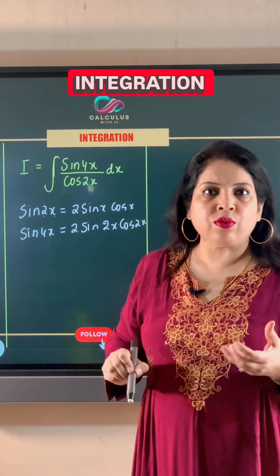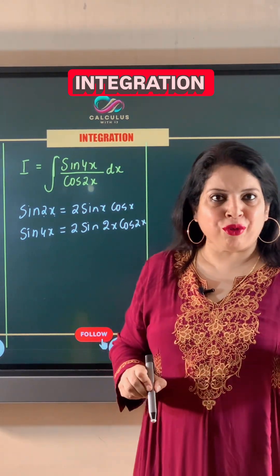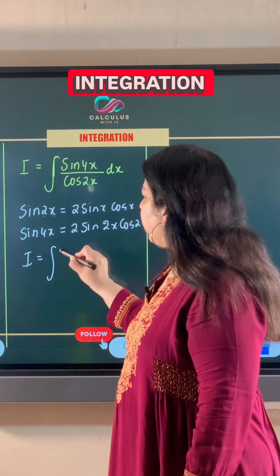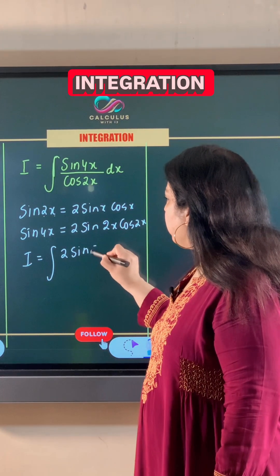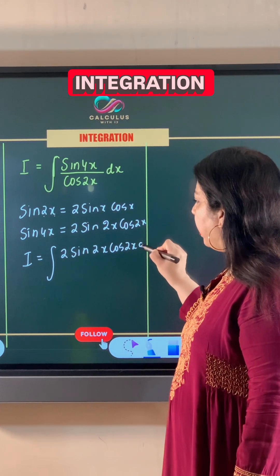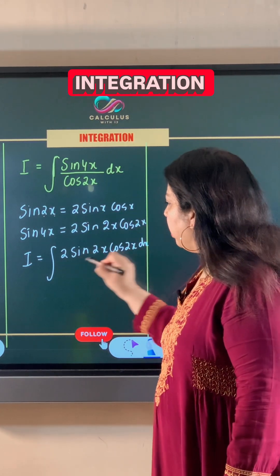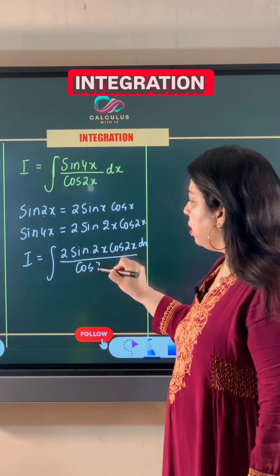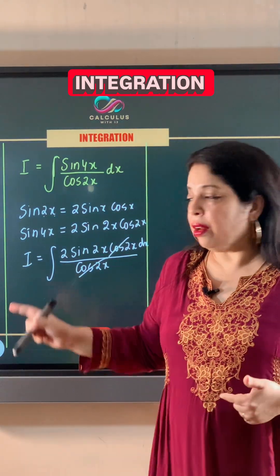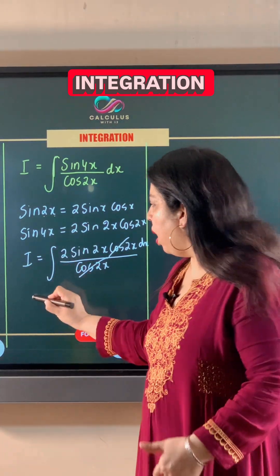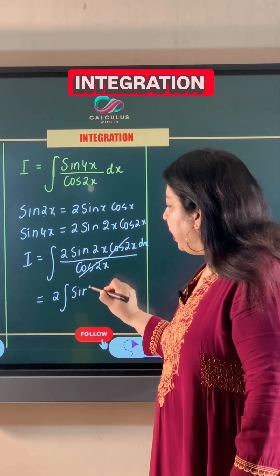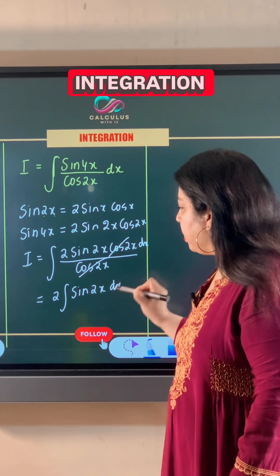Now let's apply this value of sin 4x in the numerator. Our integral becomes 2 sin 2x cos 2x dx in the numerator, and cos 2x in the denominator. Cos 2x gets cancelled, and we can write the 2 outside the integral, giving us 2 times the integral of sin 2x dx.